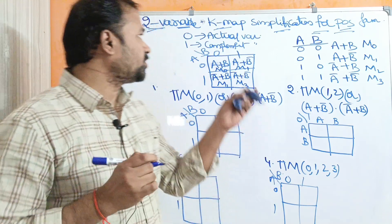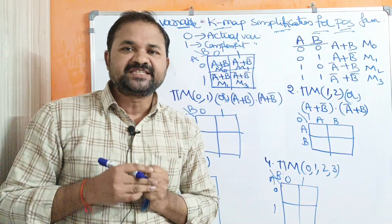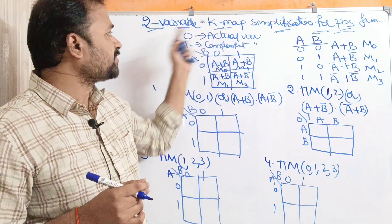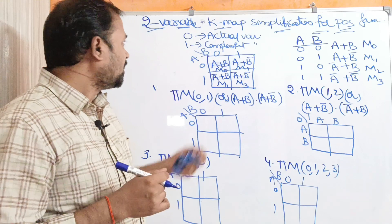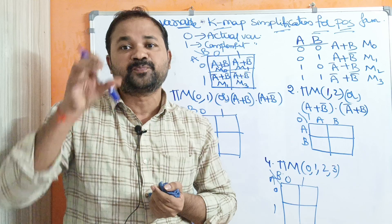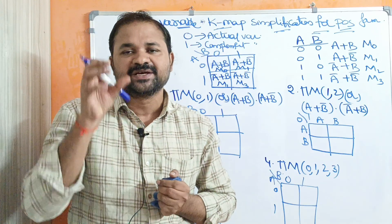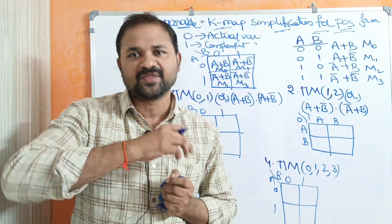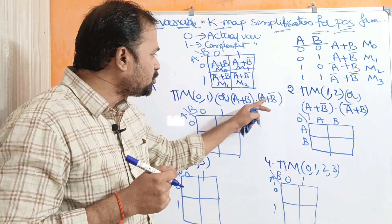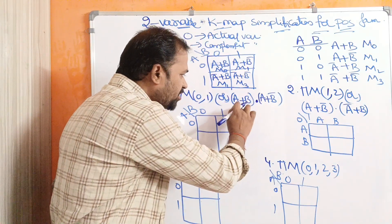Let us discuss how we can simplify a Boolean expression in Product of Sum (POS) form with the help of a two-variable Karnaugh map. In Product of Sum, we perform the product (AND) operation on max terms. Max terms require performing OR operation on the corresponding variables. For example, A plus B into A plus B bar — here we are performing the product operation on max terms.